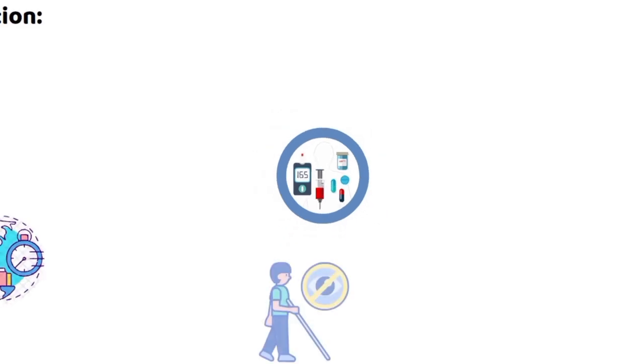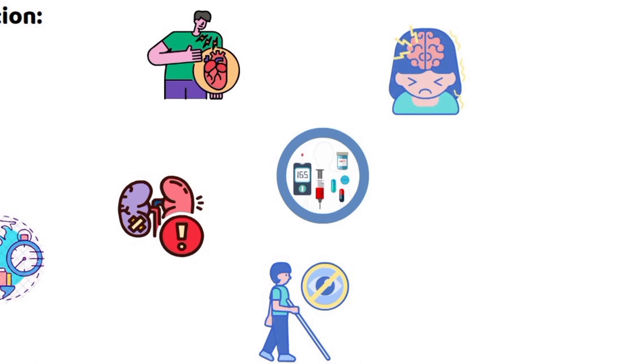Diabetes is a major cause of blindness, kidney failure, heart attacks, stroke, and lower limb amputation.